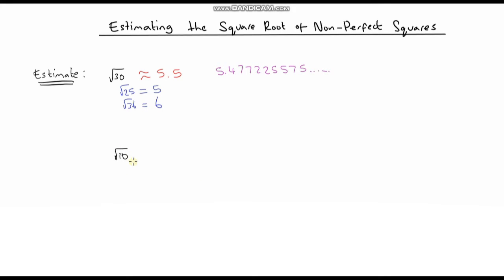Let's do one more example — let's estimate the square root of 10 using the same method. We identify the perfect squares below and above 10: the one below is 9, and the square root of 9 is exactly 3; the next square number is 16, so the square root of 16 is 4. So my answer is going to be approximately 3 point something. But this time 10 is much closer to 9 than it is to 16, so my answer will be closer to 3 than 4. I'm going to say approximately 3.2.